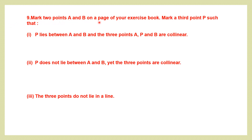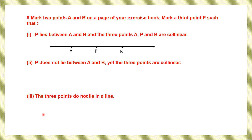Question 9: Mark two points A and B on the page of your exercise book, then mark a third point P following given conditions. First, P lies between A and B, and the three points A, P and B are collinear. Collinear points are three or more points that lie on the same straight line. We draw a straight line with arrowheads, place all three points on it, with P between A and B.